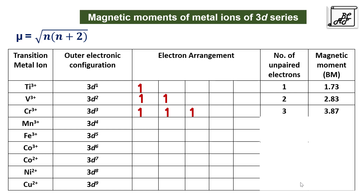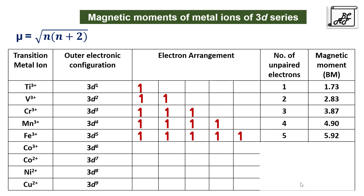For Mn³⁺ with d⁴ electronic configuration there are 4 unpaired electrons, and the magnetic moment is calculated as 4.90. For Fe³⁺ or Mn²⁺ there are 5 unpaired electrons and the total magnetic moment is 5.92 — all orbitals contain one unpaired electron. For Co³⁺ with d⁶ configuration, one pairing has occurred, giving 4 unpaired electrons, so the magnetic moment is again 4.90.